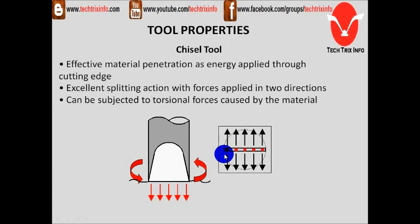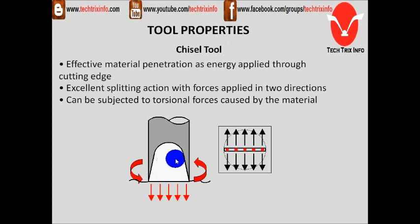Now let's see the chisel tool and its properties. This is how the end of the chisel tool looks like. It has effective material penetration as energy is applied through the cutting edge. It has excellent splitting action with forces applied in two directions, and it can also be subjected to torsional forces caused by the material. The load splits into two directions when a chisel tool is used.